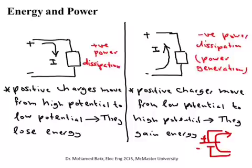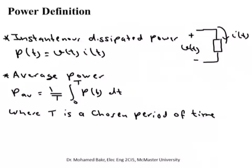To calculate power, the formula comes from electromagnetics. For any electric component with voltage v(t) across it and current i(t) through it, the instantaneous power at any moment is p(t) = v(t) × i(t). This instantaneous power can vary with time, or in DC circuits it is constant.